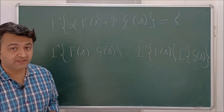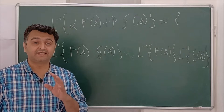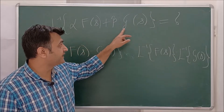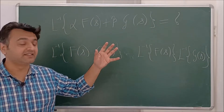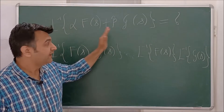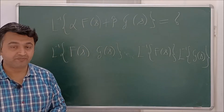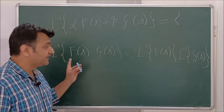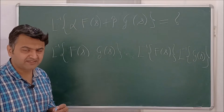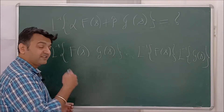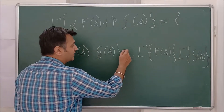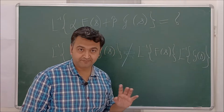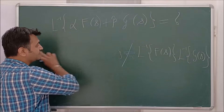Today we are going to see that Laplace inverse is linear in nature. That means if you have Laplace inverse of alpha·f(s) plus beta·g(s), then the Laplace inverse goes inside and the scalars alpha and beta come outside. Then we are going to see that Laplace inverse doesn't behave well with the product — just as Laplace also doesn't behave well with products. That means Laplace inverse of a product is not equal to the product of Laplace inverses.